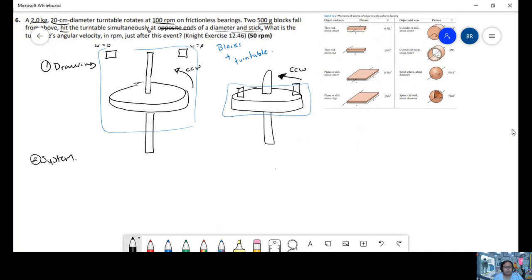This type of problem, since we identified the system to be these two objects, then we have no external forces acting upon this. So if there's no external forces, then momentum is conserved.